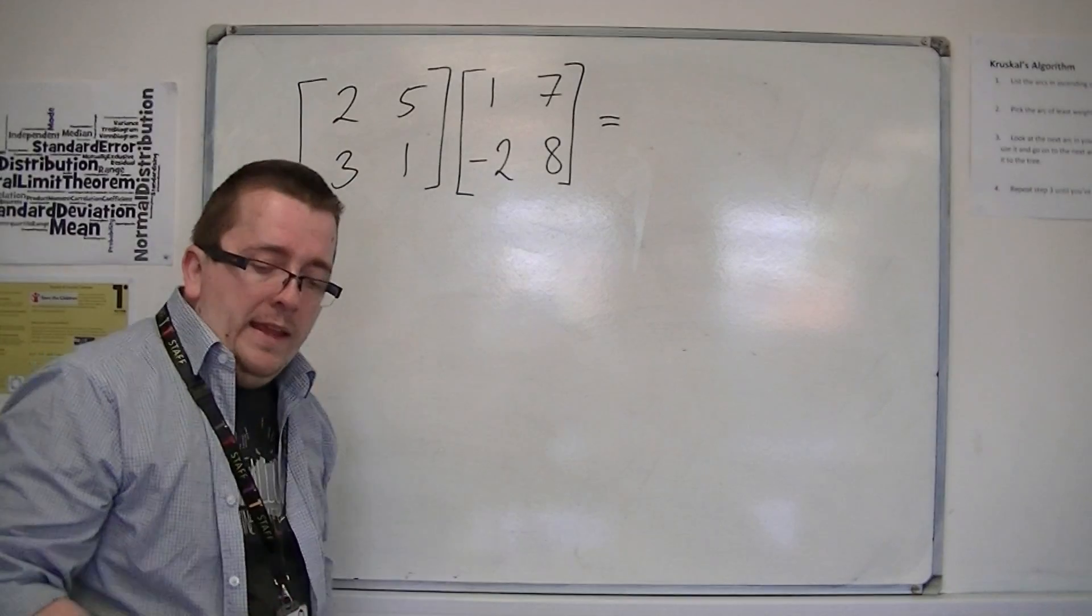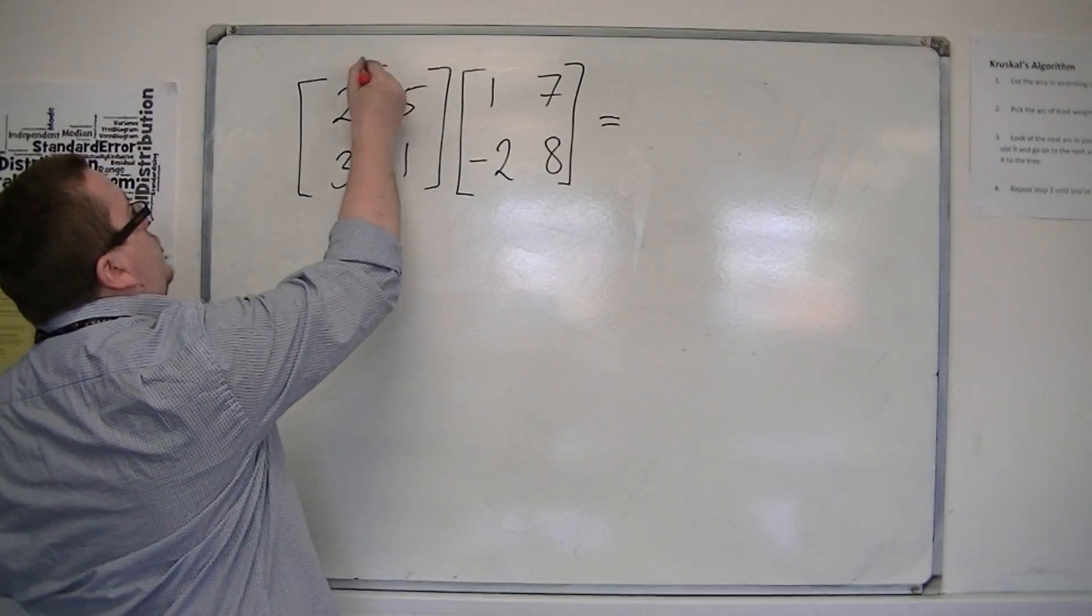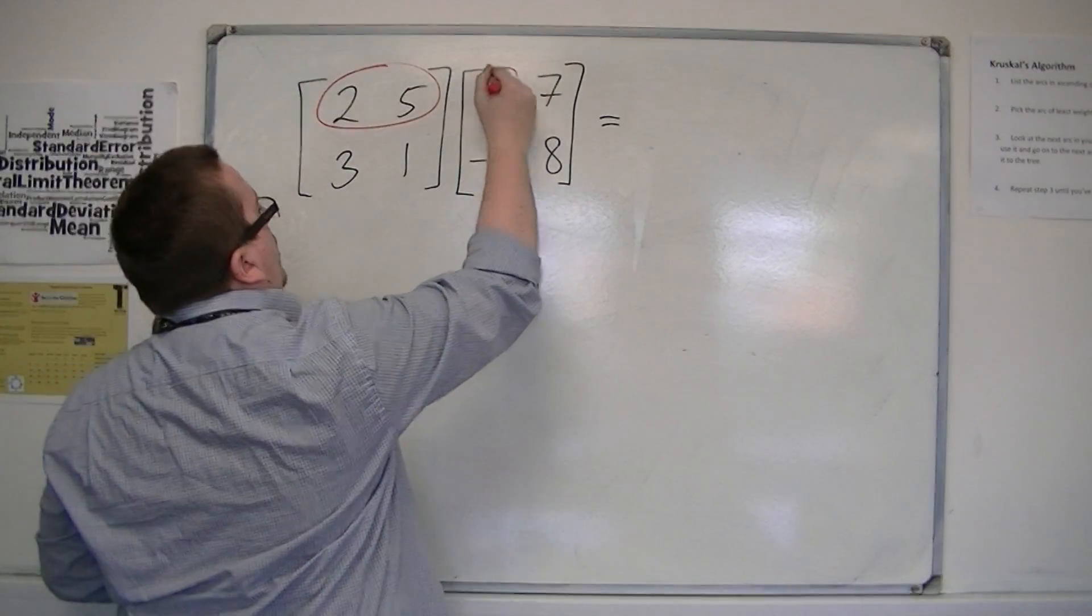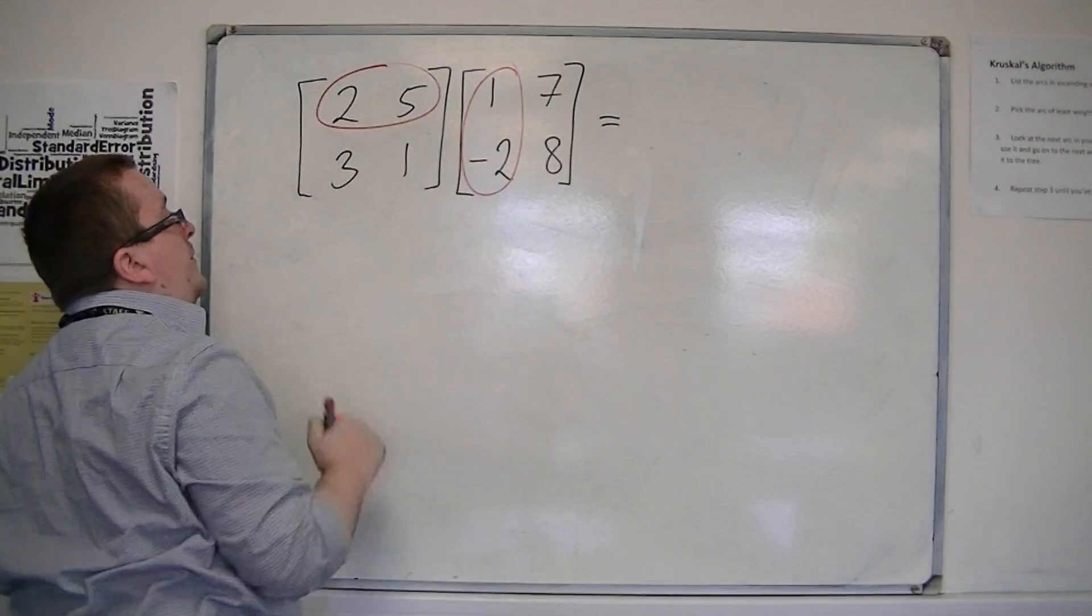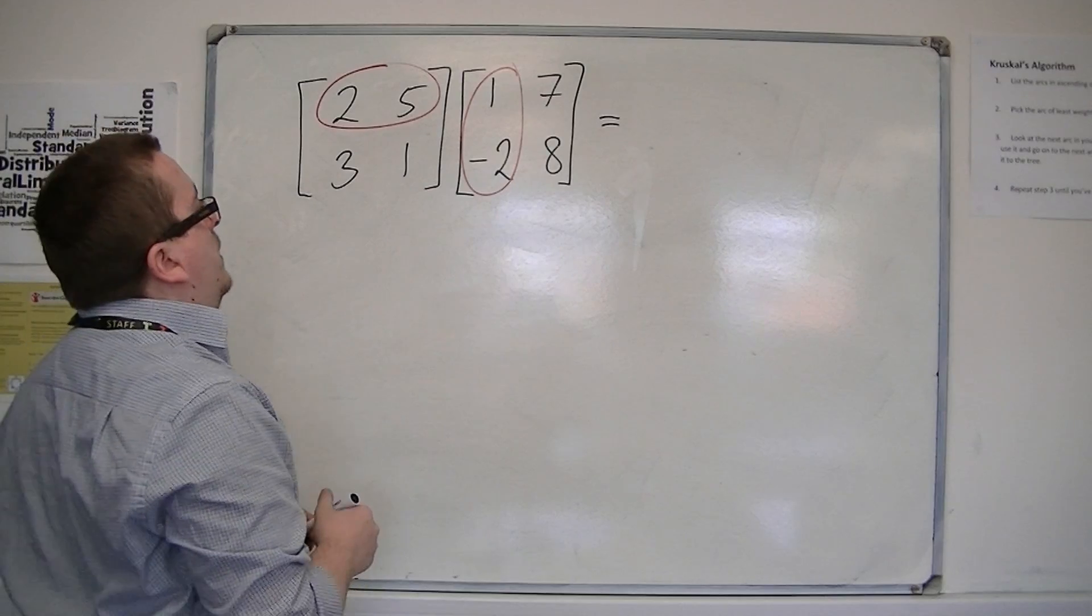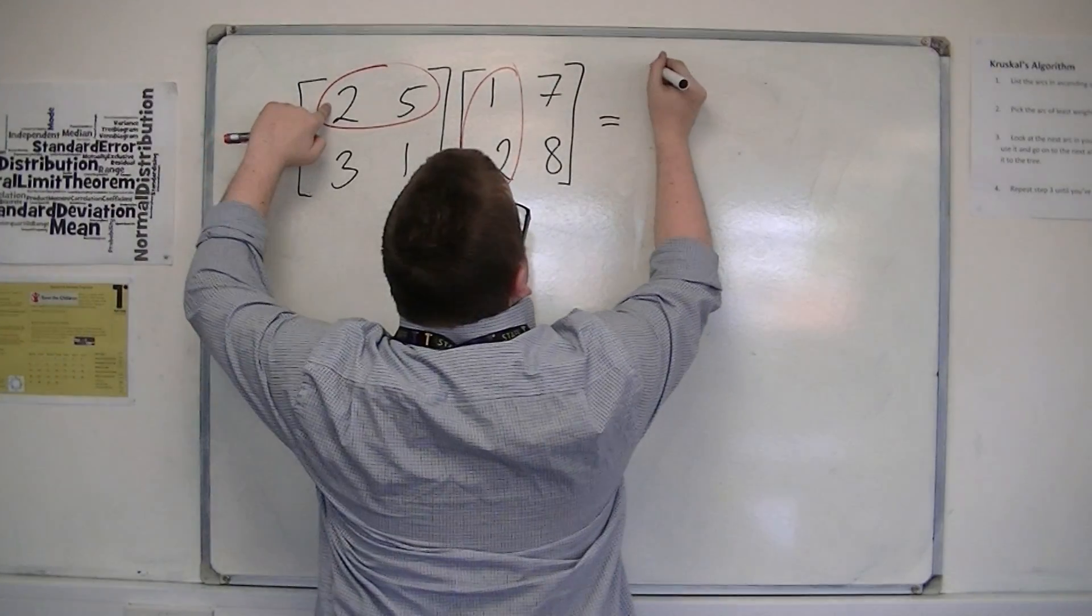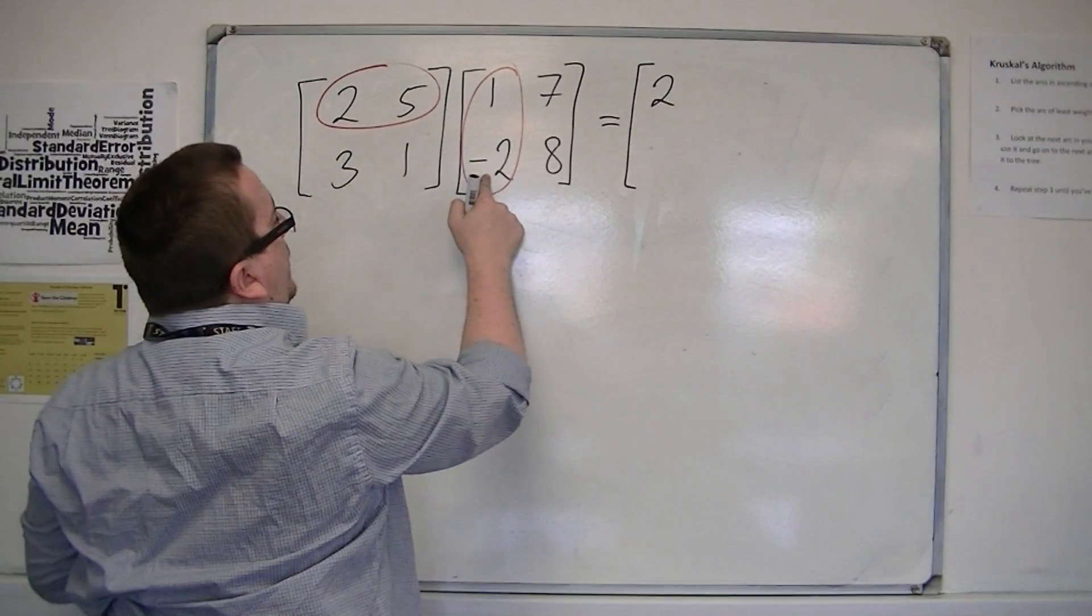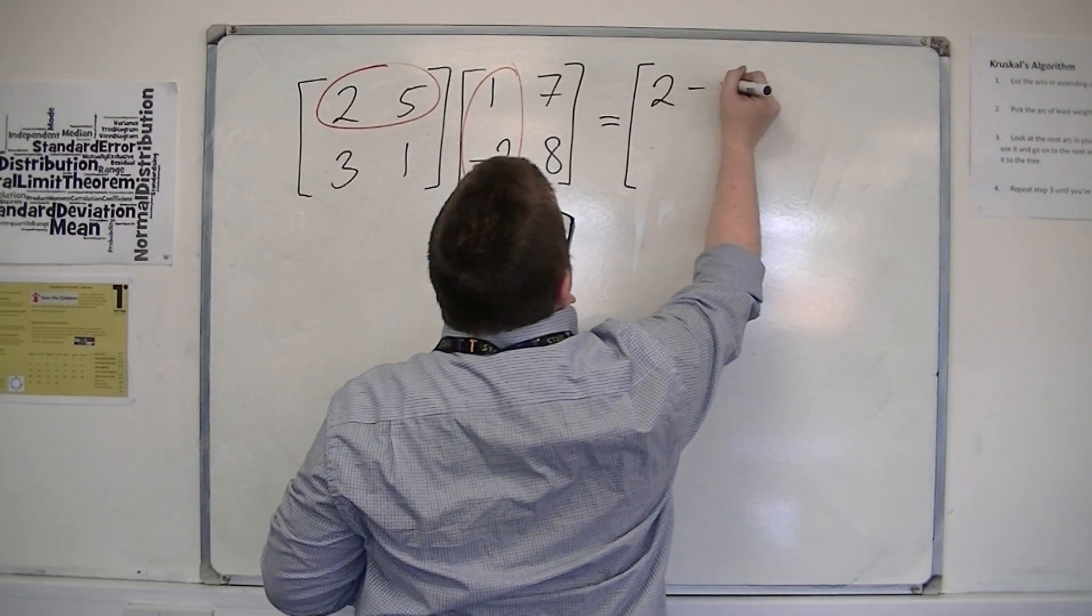How it works is that you multiply each of the rows by each of the columns. So each of the rows in the first matrix by the columns in the second, and then add those results together. So what happens is that you multiply the 2 by the 1, so we're going to get 2, and you've got the 5 by the minus 2, so that would be minus 10, and we add those together.